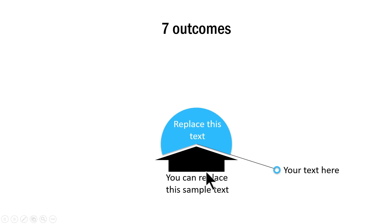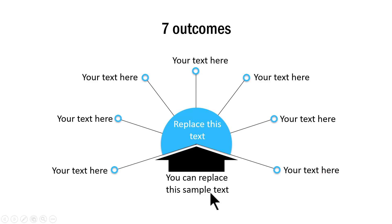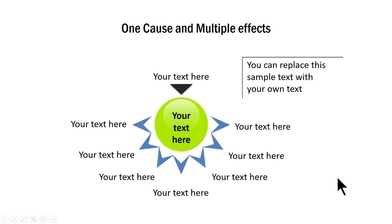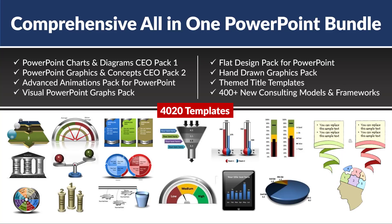And if you want animated versions, we have tons of them available. This one shows seven outcomes — the first cause, the first effect, and then on a click we bring in each of the effects. You can use this for things like one initiative you took and the various benefits your company got out of it. There are multiple ways to represent the concept of cause and effects, and all of these are available ready-made in the Comprehensive All-in-One PowerPoint Bundle. Creating these graphics on your own would take a lot of time and effort. Considering that you are a busy individual with time at a premium, this bundle gives you tremendous ROI as a one-time investment that creates a lasting impression on your audience time and time again.